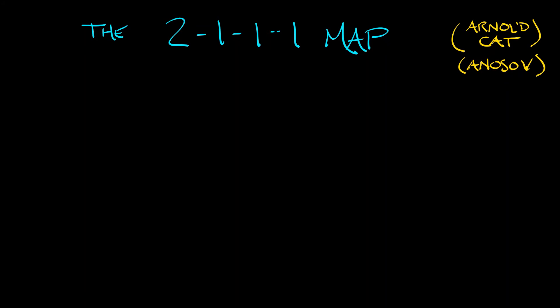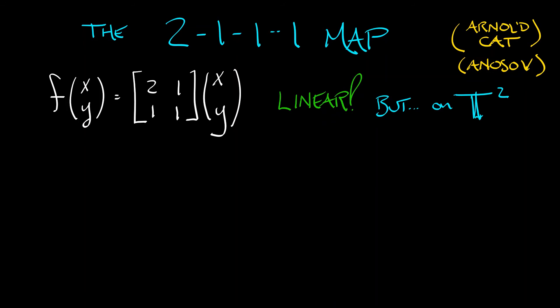The 2-1-1-1 map is given by f of xy equals the matrix 2-1-1-1 times xy. This is just a linear transformation, but it is a linear transformation on the torus. It respects the integer sublattice. It works with x and y being mod 1.